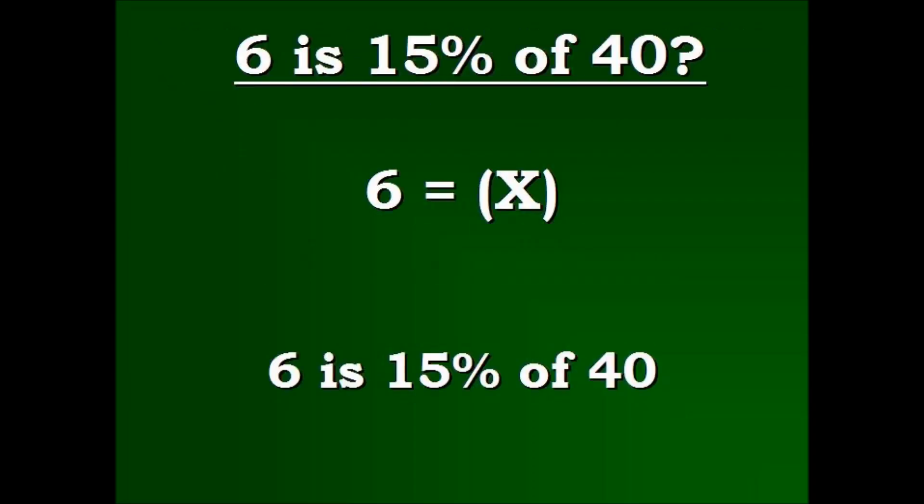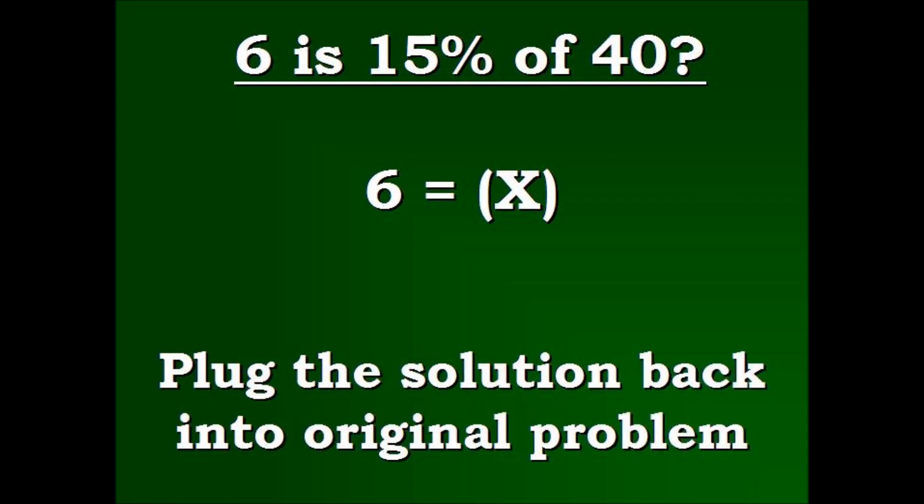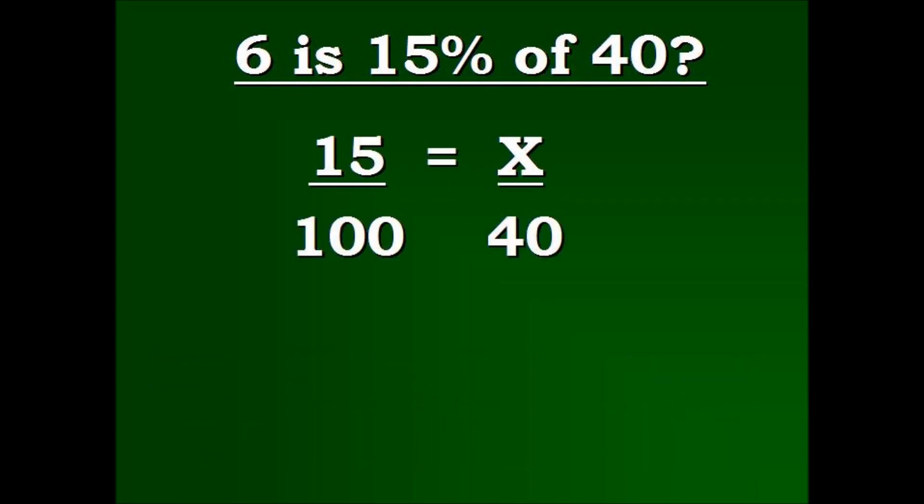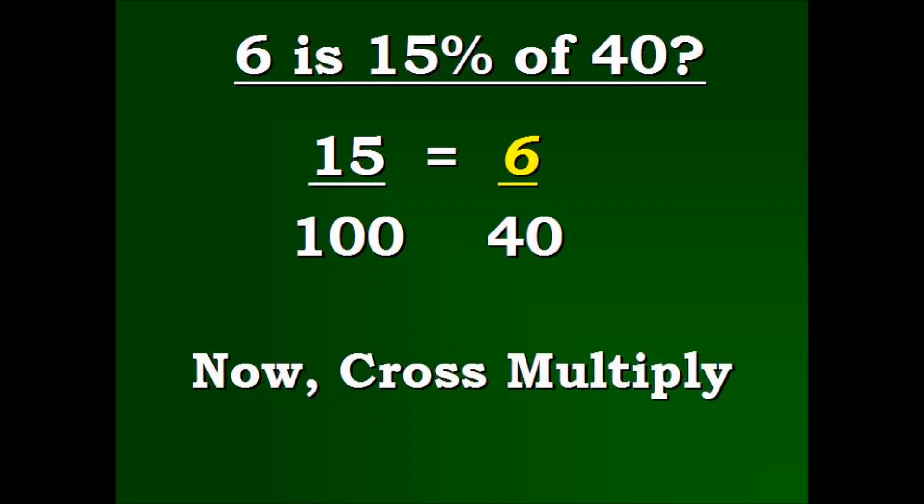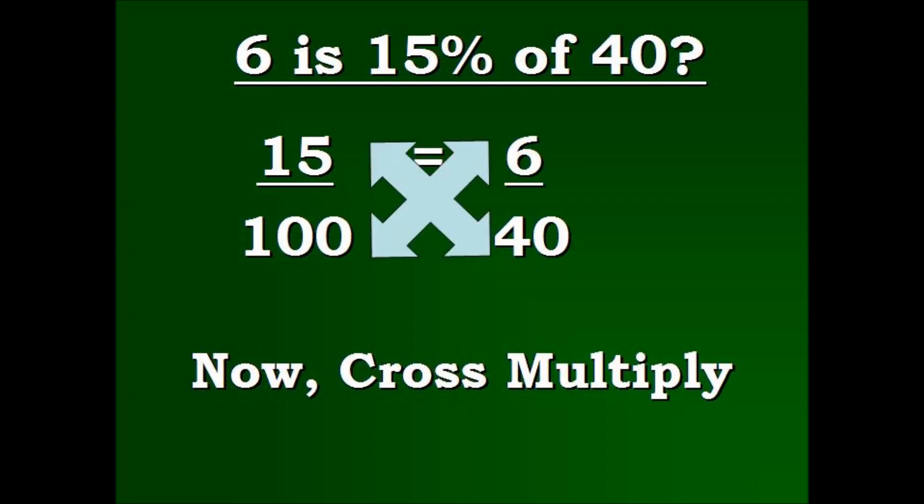Now we check our answer. We have, we all know that 6 now is 15% of 40. And what we do is we plug 6 back into our original problem. Here's how we do it. We understand that 15 over 100 was equal to x over 40. Now we know that x is 6. So now we again cross multiply or multiply diagonally across the equal sign to begin again to solve the equation to see if the equation stays balanced.